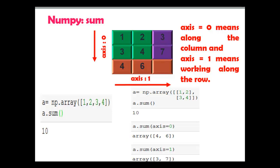On the left side I have created a 1D array: np.array([1, 2, 3, 4]) and a.sum output is 10. Since we have not mentioned axis zero or one, it will consider this array as flattened and do the sum accordingly. Output is 10 because 1 plus 2 plus 3 plus 4 equals 10.